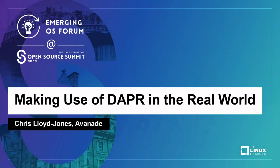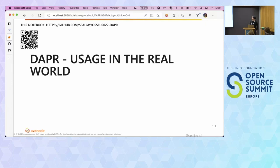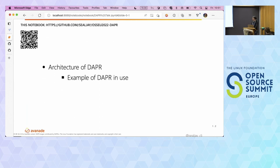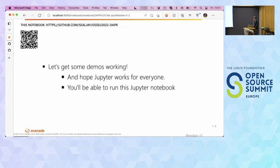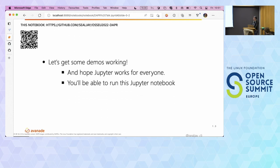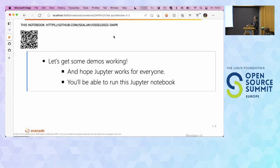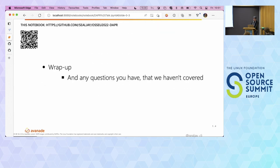Hello everyone. Thank you very much for coming along to this talk on DAPR, the Distributed Application Platform Runtime. I'm going to explain what DAPR is, show you how you can follow along, give you some examples of DAPR in use, and we have some demos as well. This whole talk is being run through a Jupyter Notebook, so if you want to run the code samples they are mixed in. You can scan the QR code or fork the repository later. At the end there will be some time for questions.